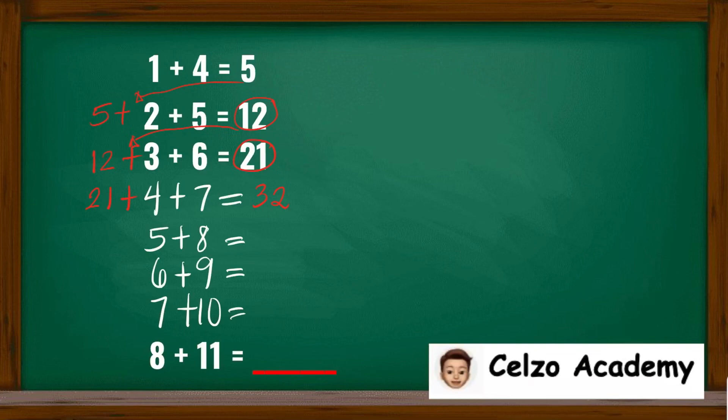For 5 plus 8, we need to add the previous answer, 32. And 32 plus 5 is 37, 37 plus 8 is 45.